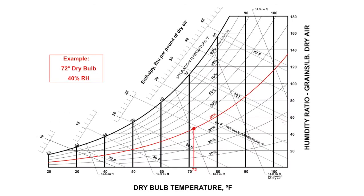We'll begin with the intersection of 72 degrees dry bulb and 40% relative humidity. If we read to the right, we can see that the humidity ratio is 46.8 grains per pound.